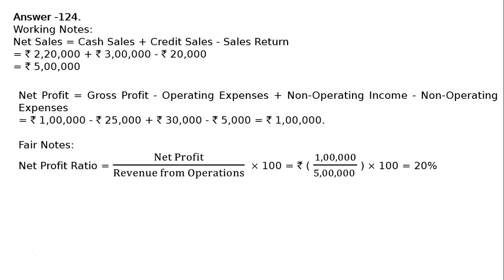Net profit ratio = net profit upon revenue from operations × 100 = rupees 1 lakh upon rupees 5 lakhs × 100 = 20 percent.